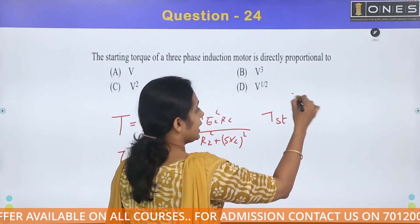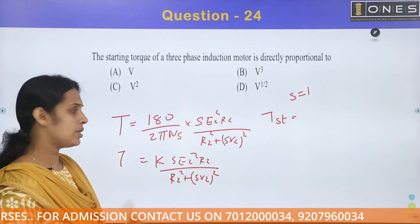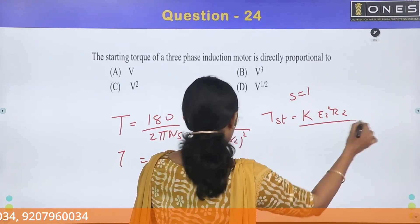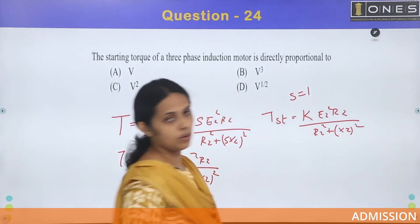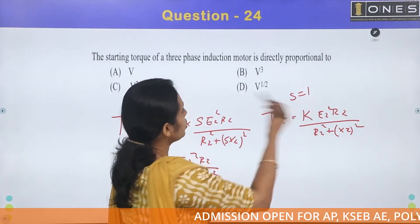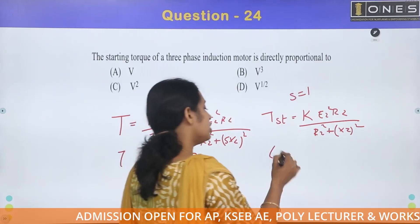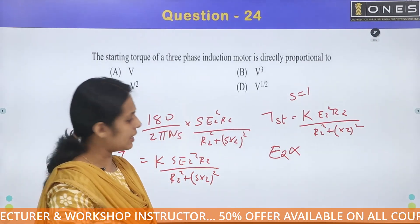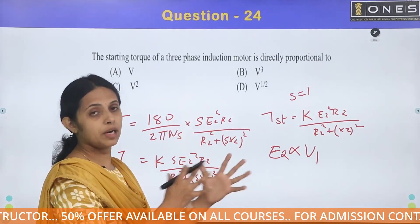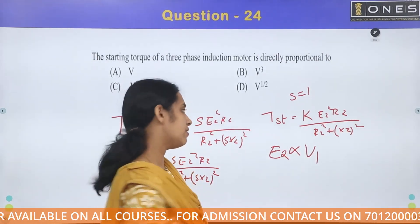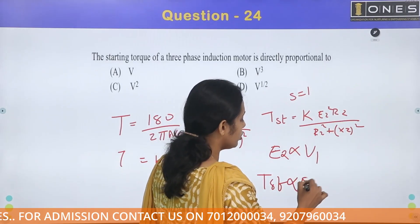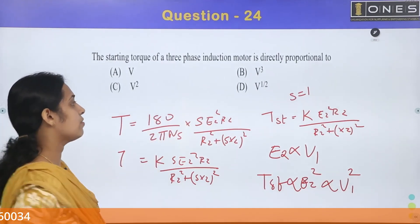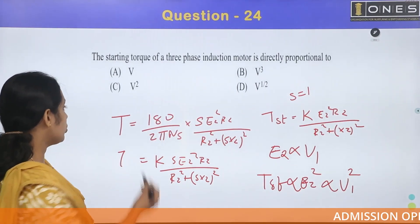For starting torque, s = 1. Substituting s = 1, starting torque = k × E2² × R2 / (R2² + X2²). Starting torque is proportional to E2², where E2 is the induced EMF in the rotor circuit. By the induction motor mutual induction principle, E2 is proportional to V1, the input voltage — similar to transformer principle. So, starting torque is proportional to E2², which is proportional to V1².